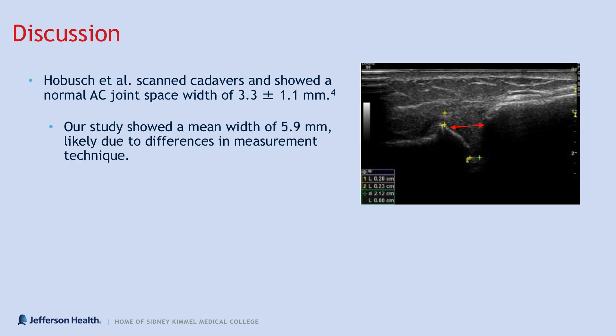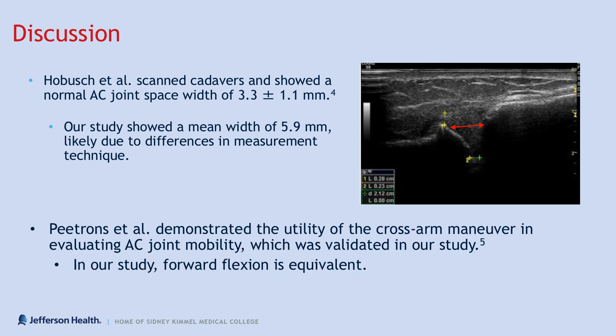Hobusch et al. scanned cadavers and showed a normal AC joint space width of 3.3 ± 1.1 millimeters. Our study showed a mean width of 5.9 millimeters, and we believe this is due to differences in measurement technique as seen in the image to the right. The study by Hobusch et al. was measured with the green markers, and the red arrow shows how we measured the AC joint width. Petrons et al. demonstrated the utility of using the cross arm adduction maneuver in evaluating AC joint mobility, and we validated that maneuver in our study.